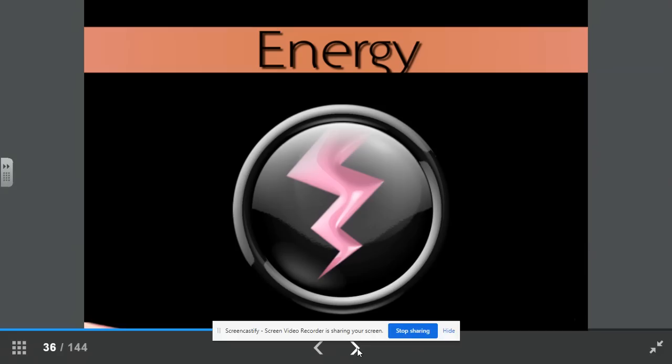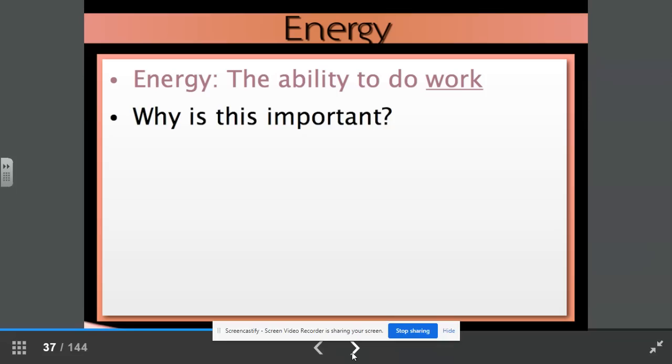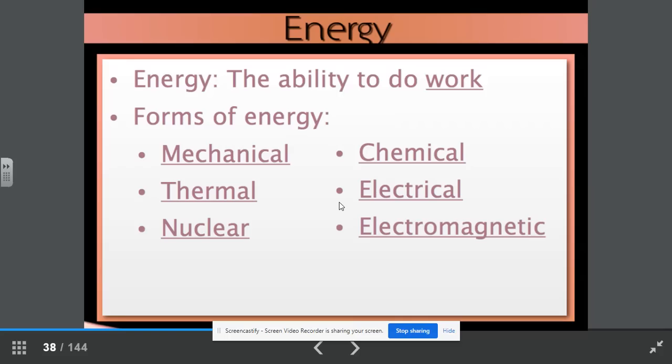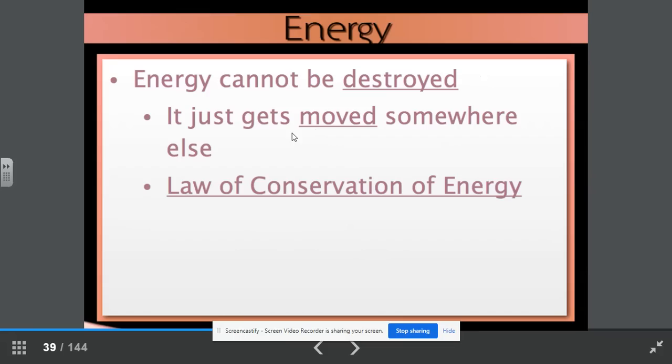Our next topic is energy. Energy is on page six. Energy is the ability to do work. We have many different types of energy, many different forms of energy. Mechanical energy, chemical energy, thermal energy, electrical energy, nuclear energy, and electromagnetic energy. Energy cannot be destroyed. It just gets moved somewhere else. The law of conservation of energy is very similar to the law of conservation of mass or matter. Matter or mass can never be created or destroyed. It just gets rearranged. The same thing with energy. It cannot be created or destroyed. It just gets moved somewhere else.